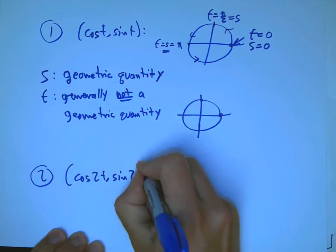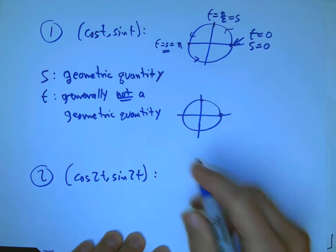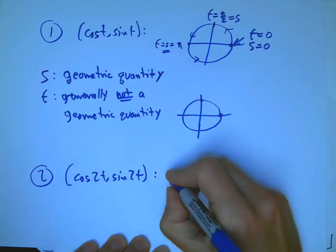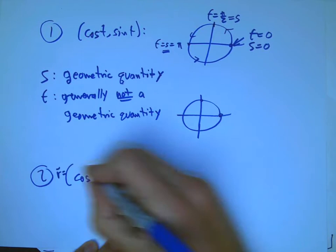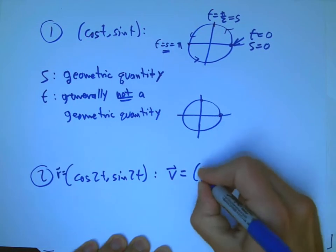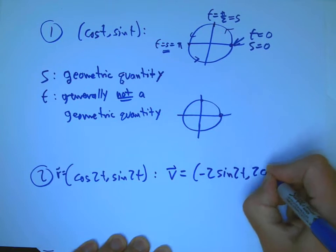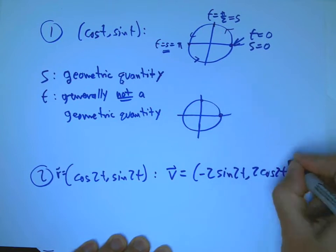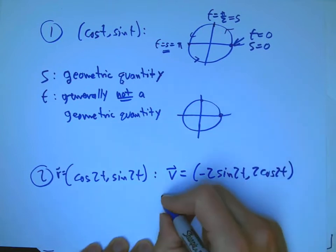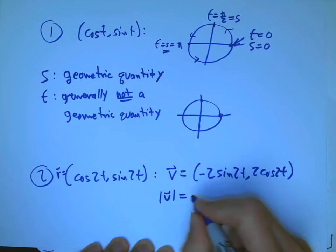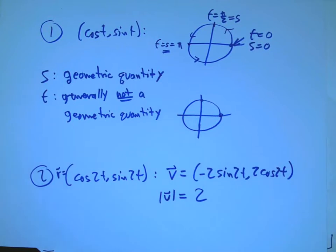So, a good example of that, a really simple example of that, is what about, like, cosine 2t, sine 2t? Let's figure out the speed for that. Well, this is r. V is now minus 2 sine 2t, 2 cosine 2t. And so, the magnitude of v, easy calculation, shows that it's 2.